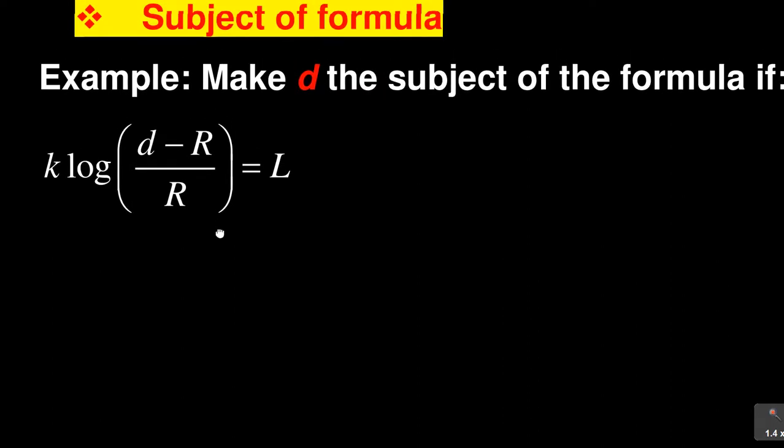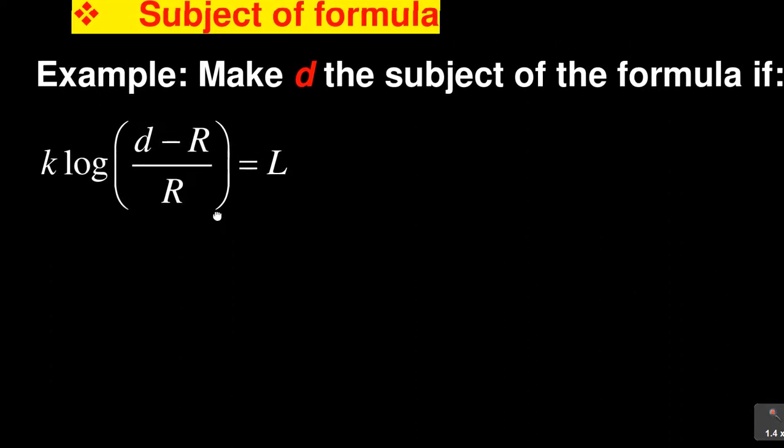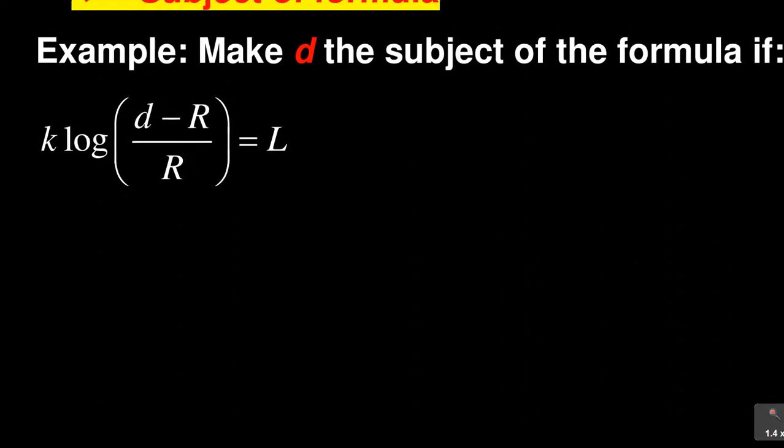Now when we are making d the subject of the formula here, the first part we need to recognize is we have this k, so we have to get rid of the k first because with the k, it is affecting us to apply some laws of logarithms. So if I can divide everything by k, for example, if I can divide this left-hand side by k and I divide the right-hand side by k...